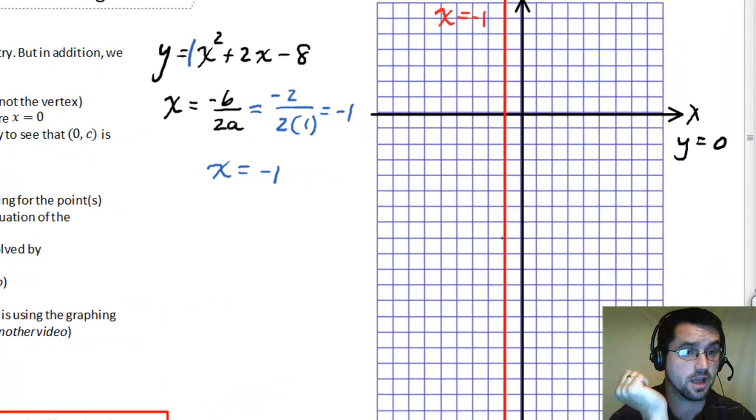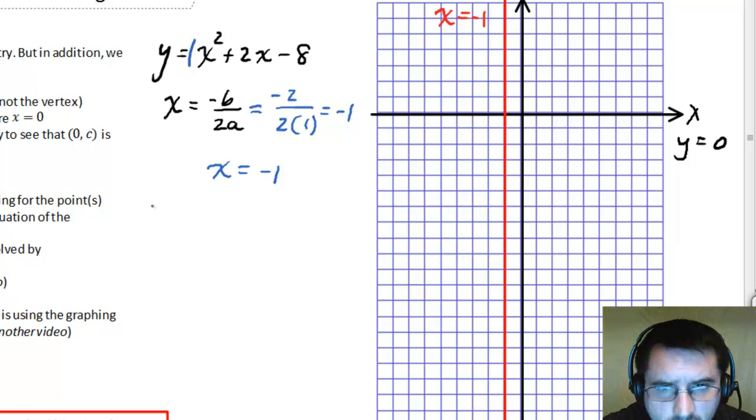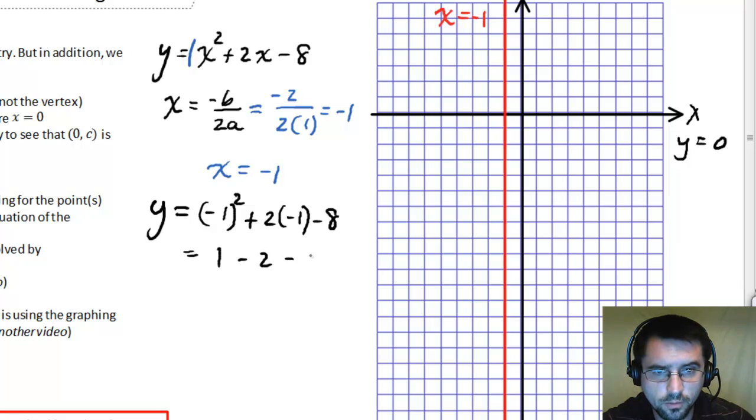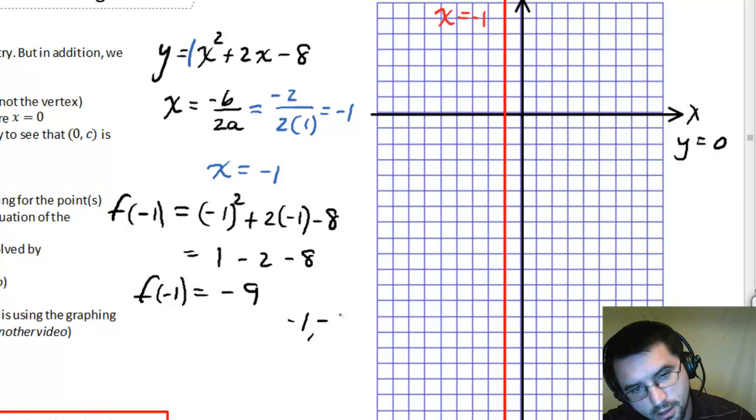Somewhere on it is the vertex. Where? Well, each input produces only one output. So this parabola only crosses that line in one place. So if I want to find where it crosses, I plug in negative 1 for x. So I'm going to plug in negative 1 in for x, and I get 1 minus 2 minus 8, which is negative 9. Another way of writing this is I can say f of negative 1. So f of negative 1 equals negative 9. So our vertex is at negative 1 comma negative 9.